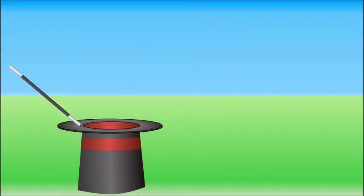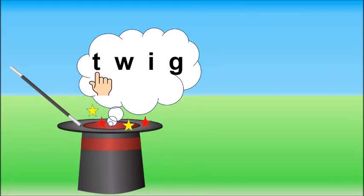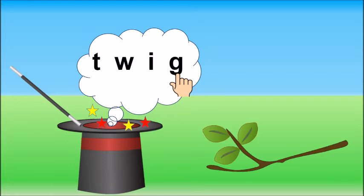Abracadabra gilly gilly choo, what is the next word? T W I G, twig. It is a twig. It grows on branches. Birds use twigs to make their nest.